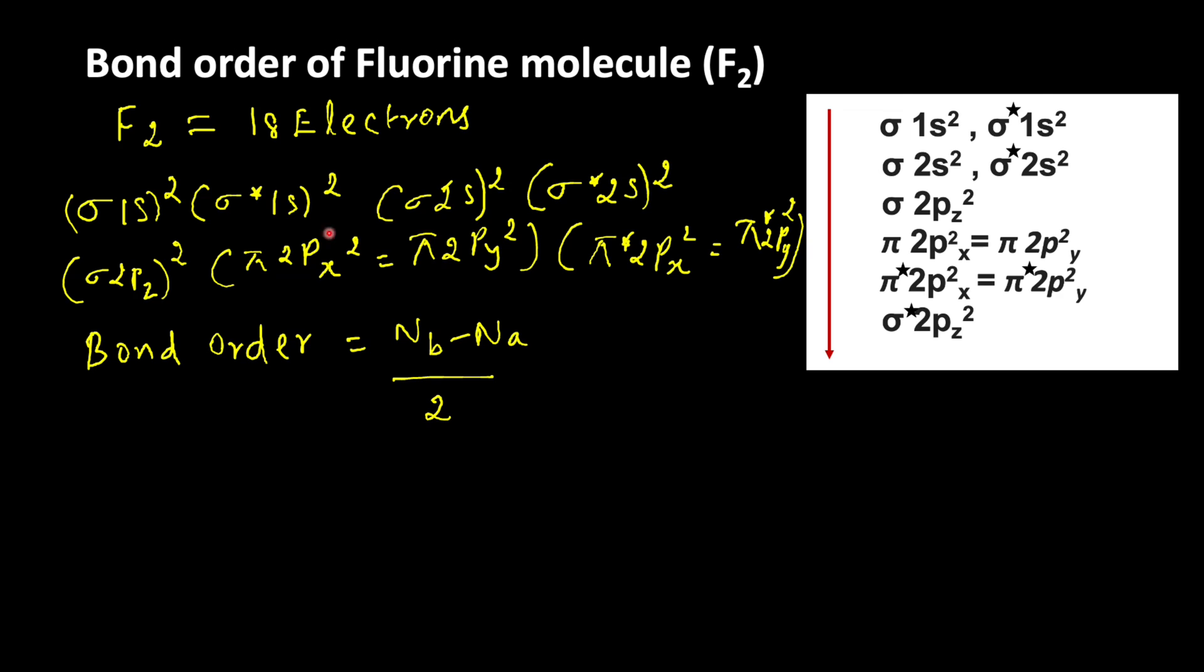For anti-bonding electrons: sigma star 1s: 2, sigma star 2s: 2, so 2 plus 2 is 4, then pi star 2px² and pi star 2py², so 4 plus 2 is 6, 8. So bonding electrons 10 and anti-bonding electrons 8.